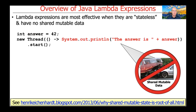Lambda expressions are most effective when they're stateless — in other words, they have no shared mutable data. If you start passing shared mutable data in Lambda expressions, especially if you pass them to threads, then you're just inviting various types of concurrency hazards such as race conditions or issues with atomicity and visibility. So be careful of that. Take a look at the link at the bottom of this slide if you want to find out why shared mutable state is the root of all evil in concurrent programming.